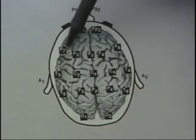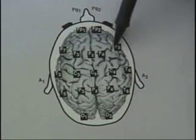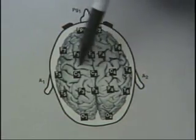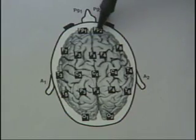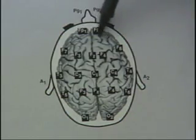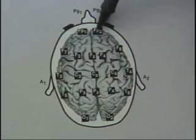The F locations, F7, F3, FZ, F4, and F8, lie over the frontal lobe. FP1 and FP2 are in the prefrontal areas. The connection is made directly on the forehead.